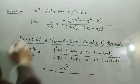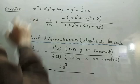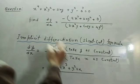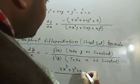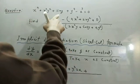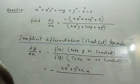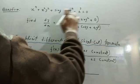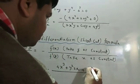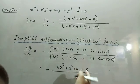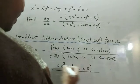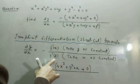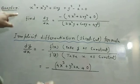Any constant terms have derivative zero. For the denominator, we take the derivative with respect to y, treating x as constant. The derivative of x⁴ is zero since it's constant. For the x²y² term, x² is constant and derivative of y² is 2y. Derivative of sin y is cos y, and derivative of y⁴ is 4y³. This gives the final answer.